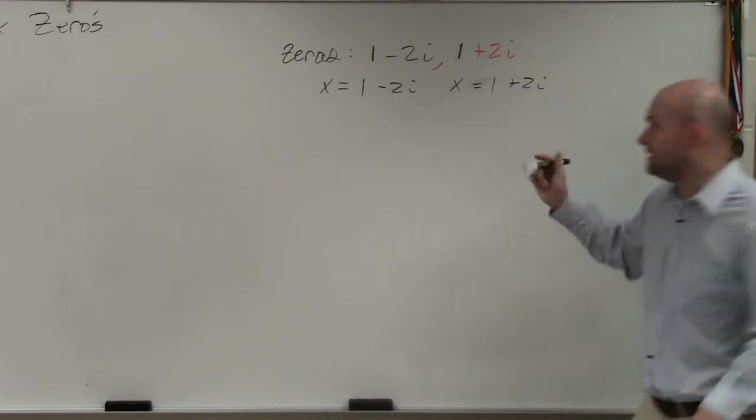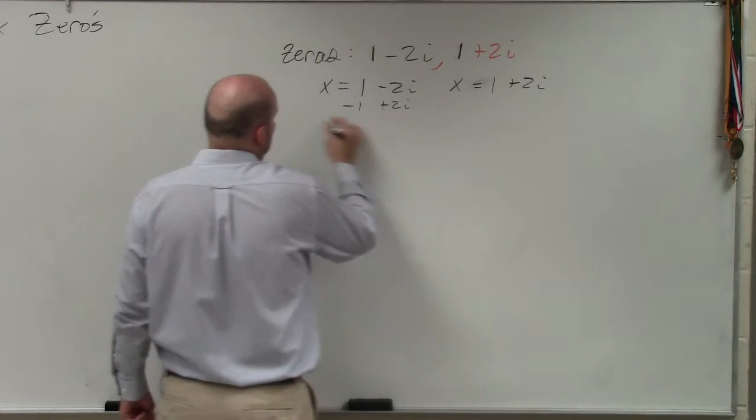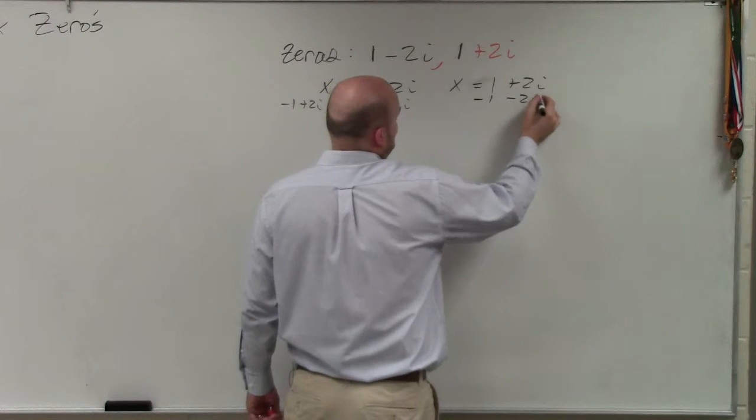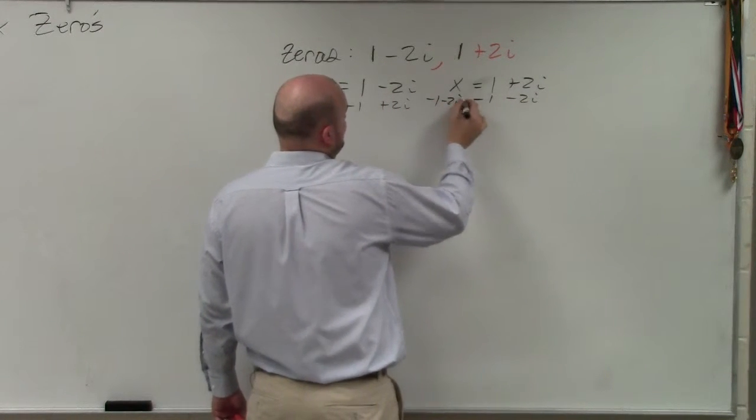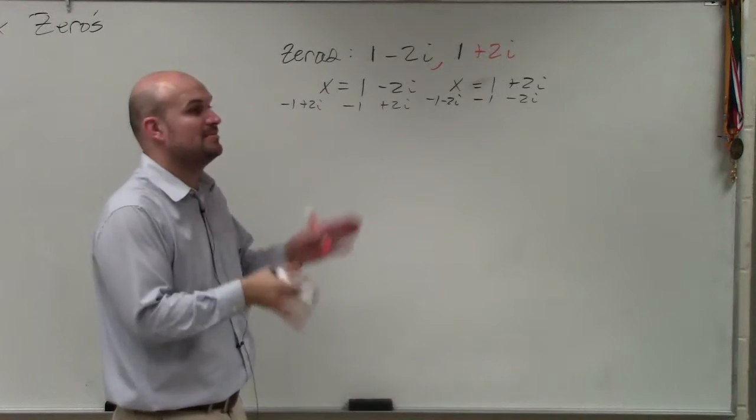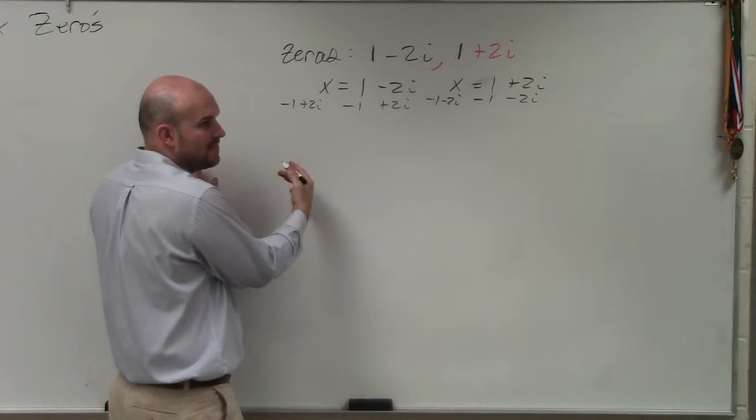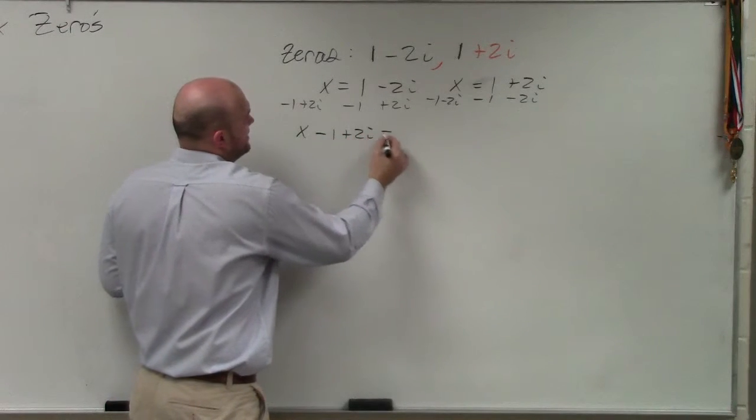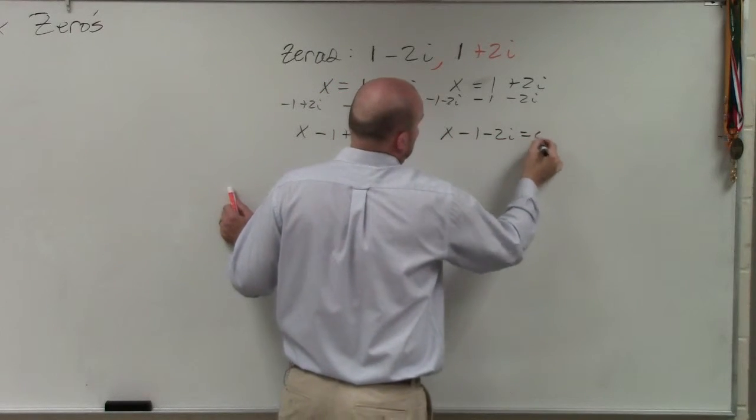So now, we set them equal to zero. So we subtract 1 plus 2i, subtract 1 plus 2i. Subtract 1, subtract 2i. So I have x minus 1 plus 2i equals 0, x minus 1 minus 2i equals 0. And remember, when you have two factors set equal to zero, you can multiply them equal 0.